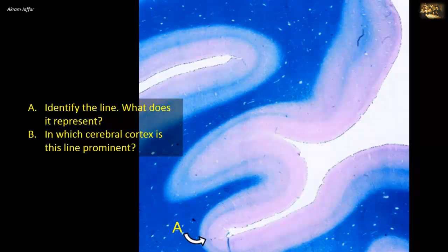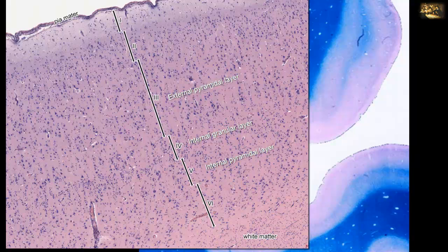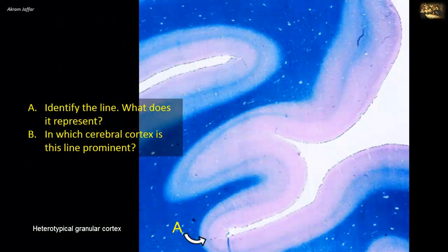In sensory cortices, which are termed heterotypical granular cortices, the internal granular layer — layer four of the cortex — is thickened, with a concomitant reduction of the adjacent pyramidal layers. This thickening of layer four occurs because layer four in sensory cortices receives particularly profuse projections from sensory thalamic nuclei. These incoming thalamic fibers terminate preferentially in layer four, thus forming a line of white matter within the gray cortex.